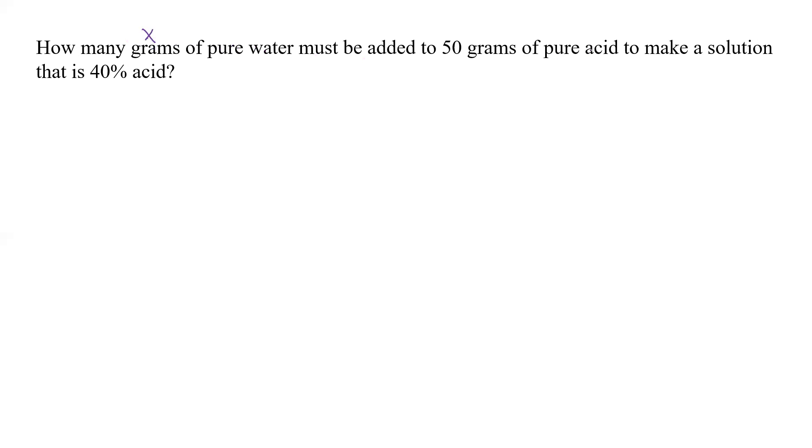So we need X here. It must be added to 50 grams of pure acid to make a solution, which we don't know. So let's call that Y. That is 40 mils or 40% acid. So X equals grams of pure H2O. Y equals grams of 40% acid.